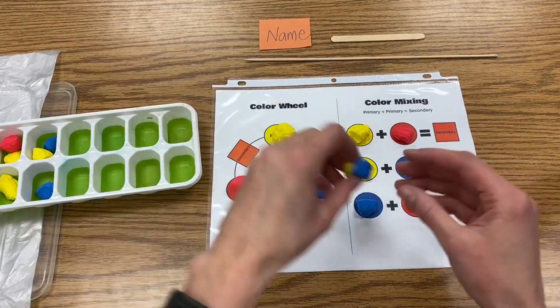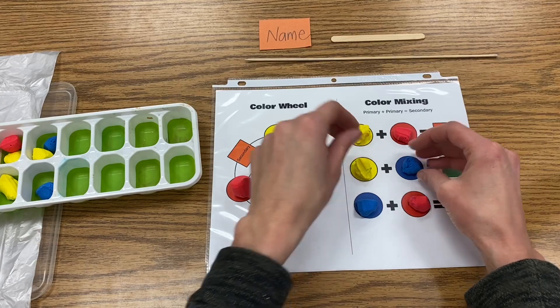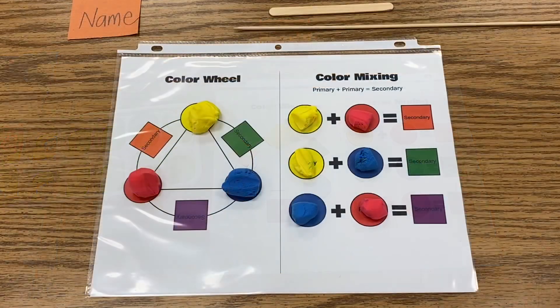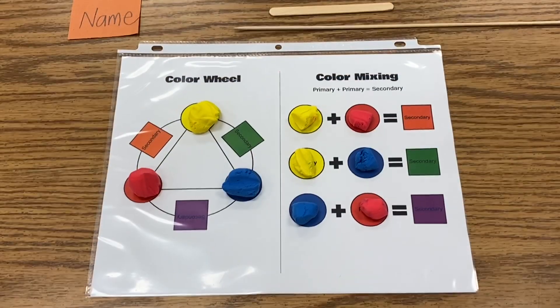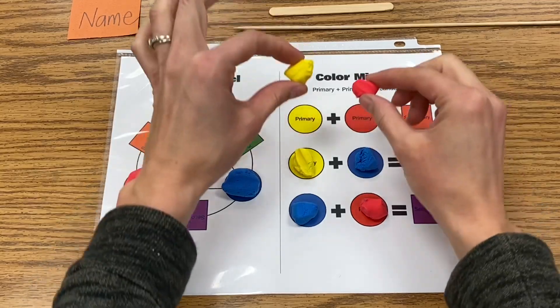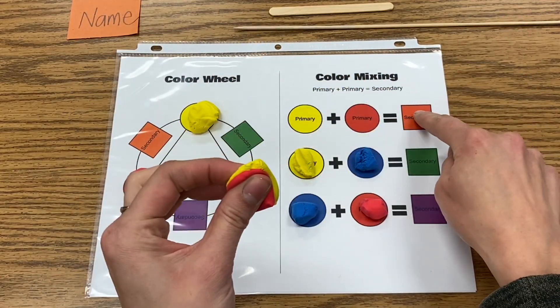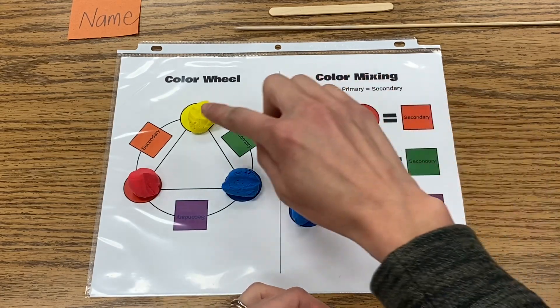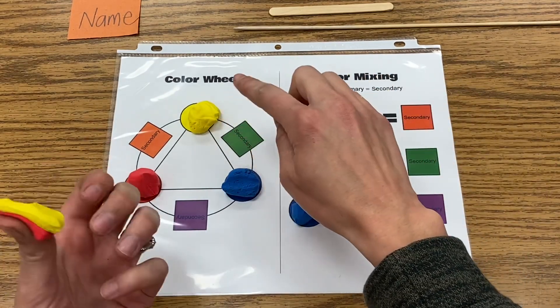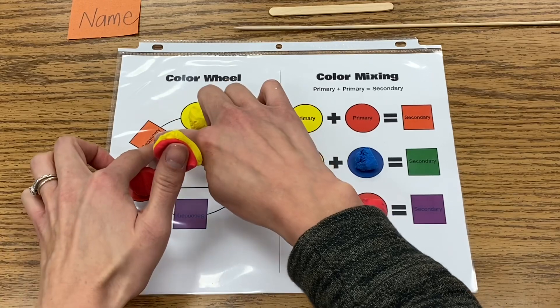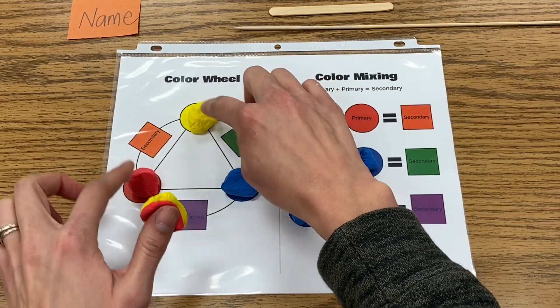And then I will put my yellow and blue here. Now this is the fun part: if you take two primary colors and you mix them together, it will make a secondary color. If I look on the color wheel at red and yellow, I notice that in between them is orange.